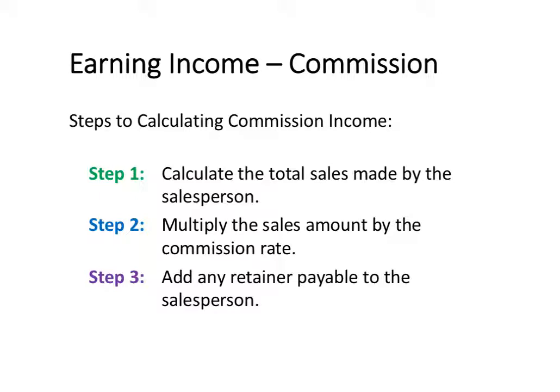There are three steps when calculating someone's commission income. The first step is to calculate the total sales made by that person. Once you have that total sales amount, the second step is to multiply the total sales by the commission rate.